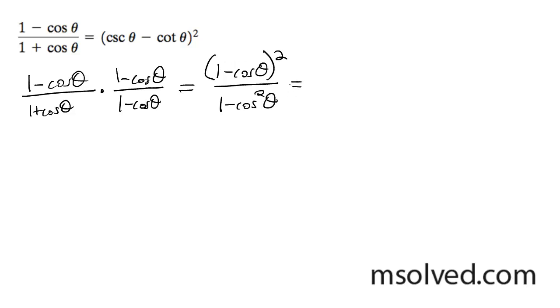Now on the bottom, I'm going to convert this trig identity to sine squared theta. And on top, we'll have our 1 minus cosine theta squared.